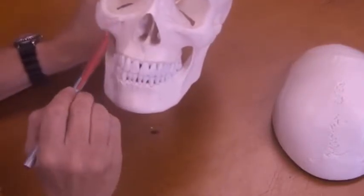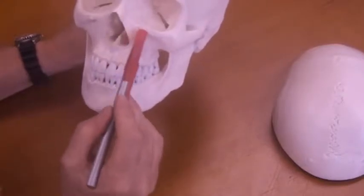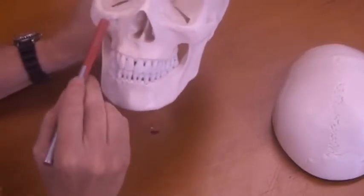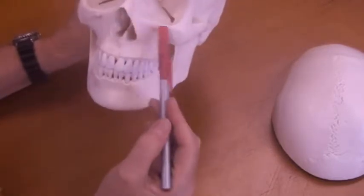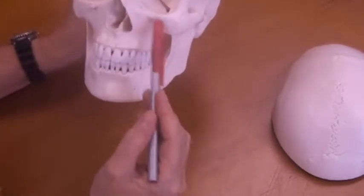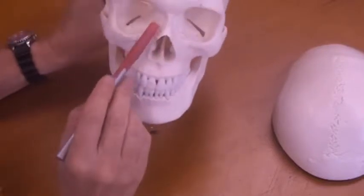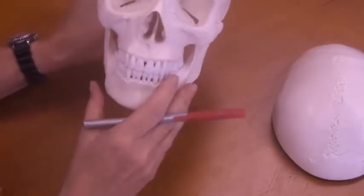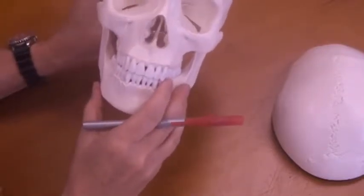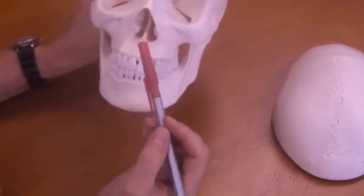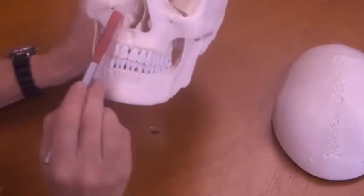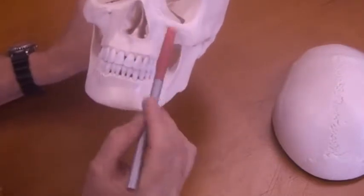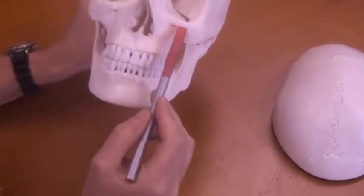You have two maxilla bones, which form the top part of your jaw here. So you've got a left maxilla and a right maxilla. A couple interesting things that we can find on the maxillary bones, these small little holes that are just underneath the orbits, these are called infraorbital foramen.